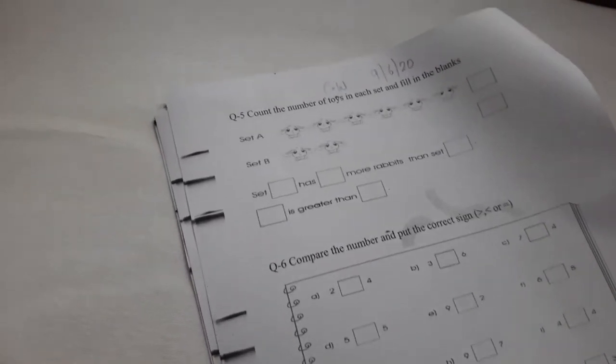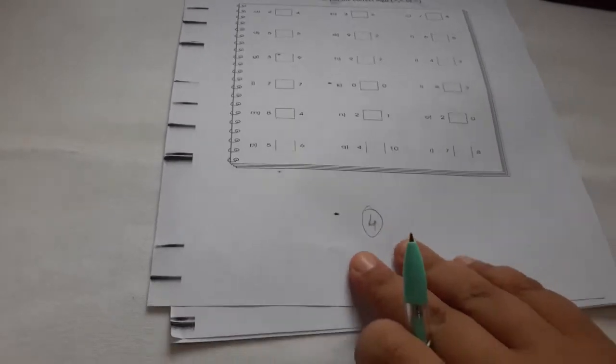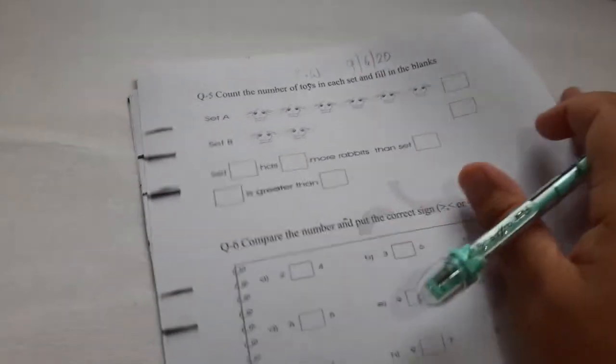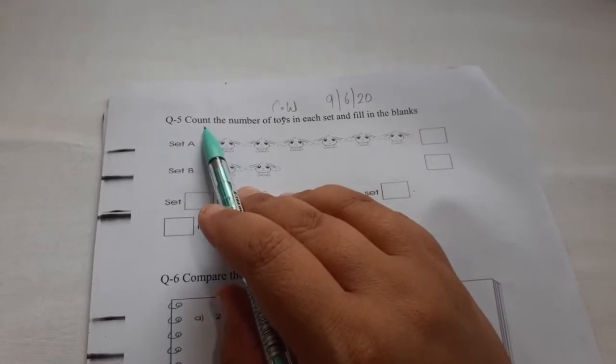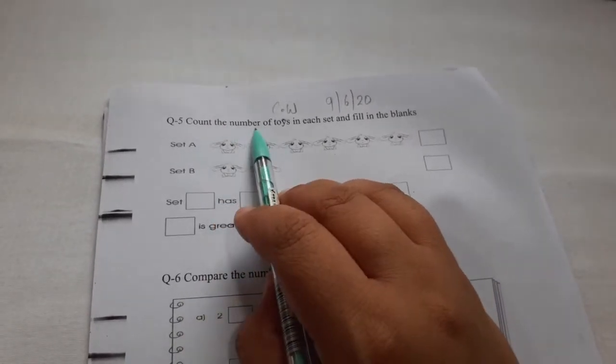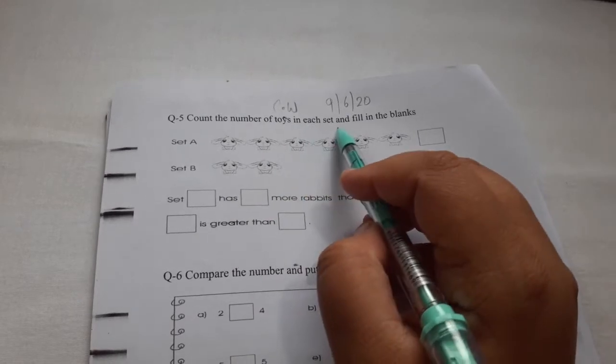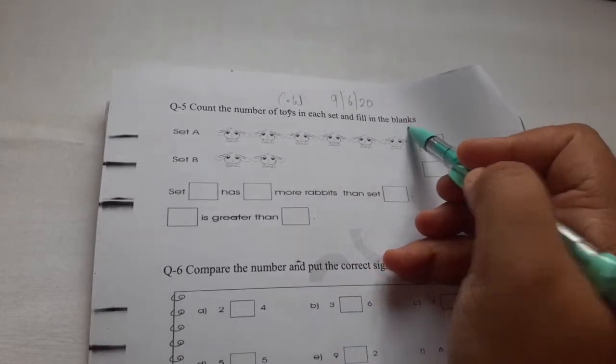Let us first solve question number 5 on page number 4. Come to question number 5. Read the question everyone. Count the number of toys in each set and fill in the blanks.